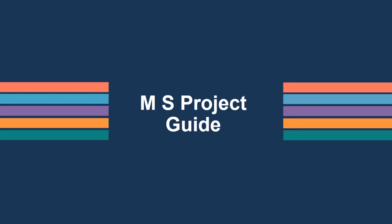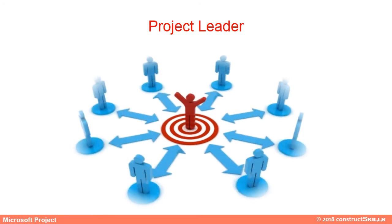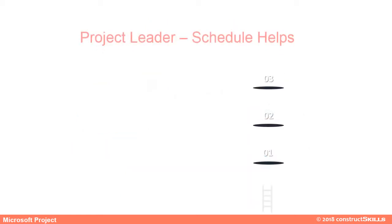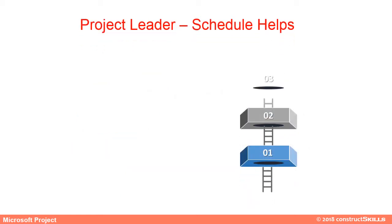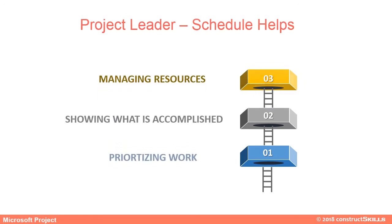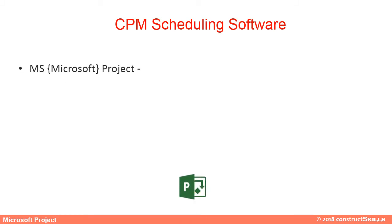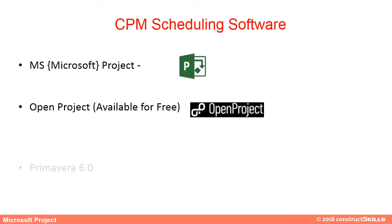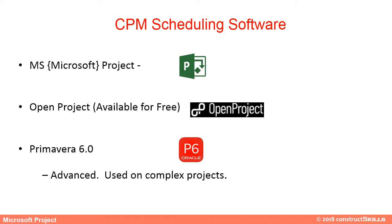In this lecture we will learn how to create a project in MS Project. A project leader is responsible to ensure the three key components — cost, schedule, and scope constraints — are met for a project. Each component is crucial and interdependent. Schedule helps in prioritizing work, showing what has been accomplished, and helping manage resources. The three commonly used scheduling software are MS Project, Primavera P6, and Open Project.